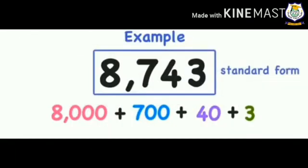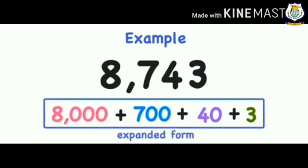Here, 8743 is the standard form. The place value of 8 is 8000, the place value of 7 is 700, the place value of 4 is 40, and the place value of 3 is 3. So 8000 + 700 + 40 + 3 represents the expanded form.